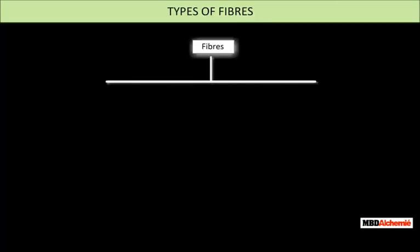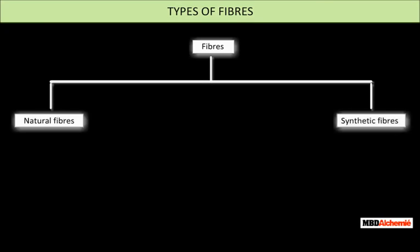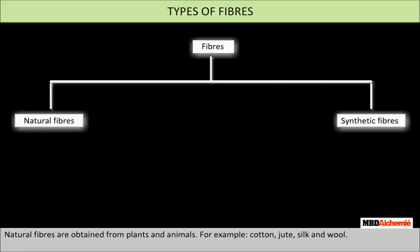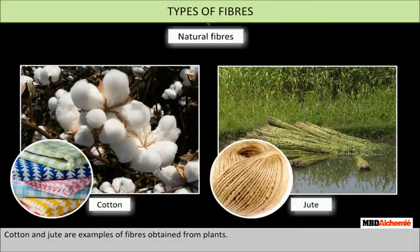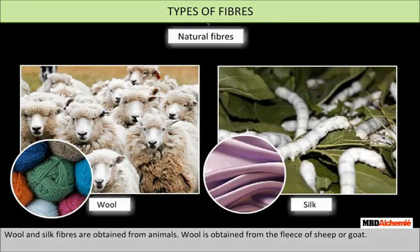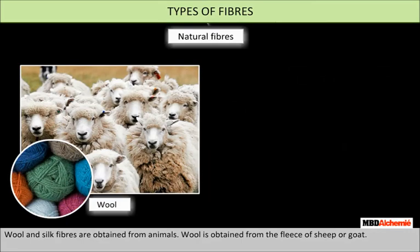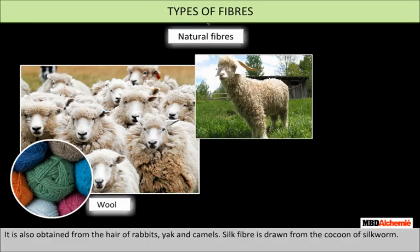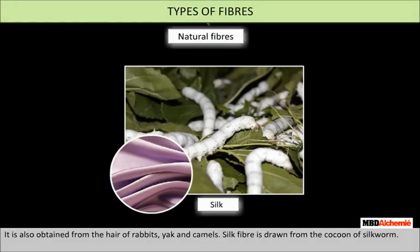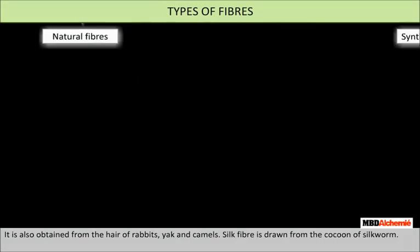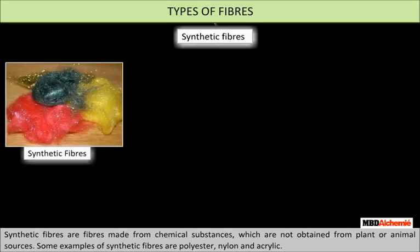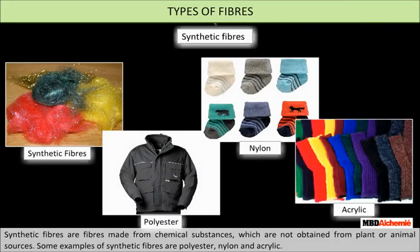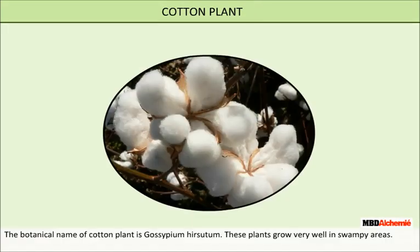Types of fibers: fibers are of two types — natural fibers and synthetic fibers. Natural fibers are obtained from plants and animals. For example, cotton, jute, silk, and wool. Cotton and jute are obtained from plants. Wool is obtained from the fleece of sheep or goat, and also from the hair of rabbits, yak, and camels. Silk fiber is drawn from the cocoon of the silkworm. Synthetic fibers are made from chemical substances not obtained from plant or animal sources — examples include polyester, nylon, and acrylic.